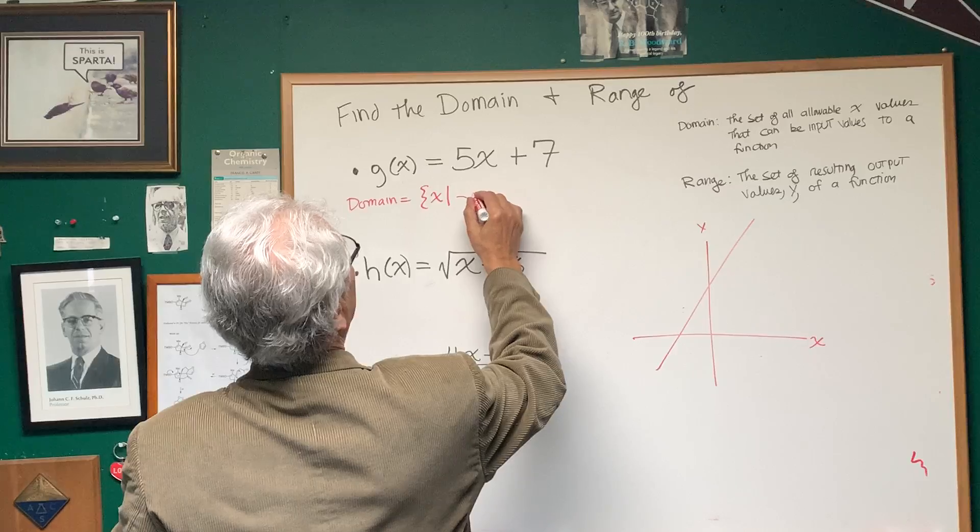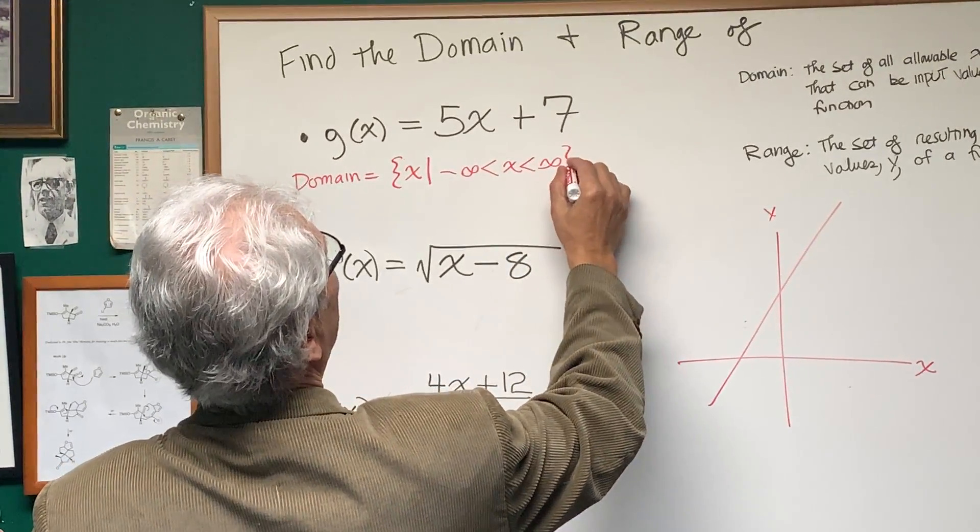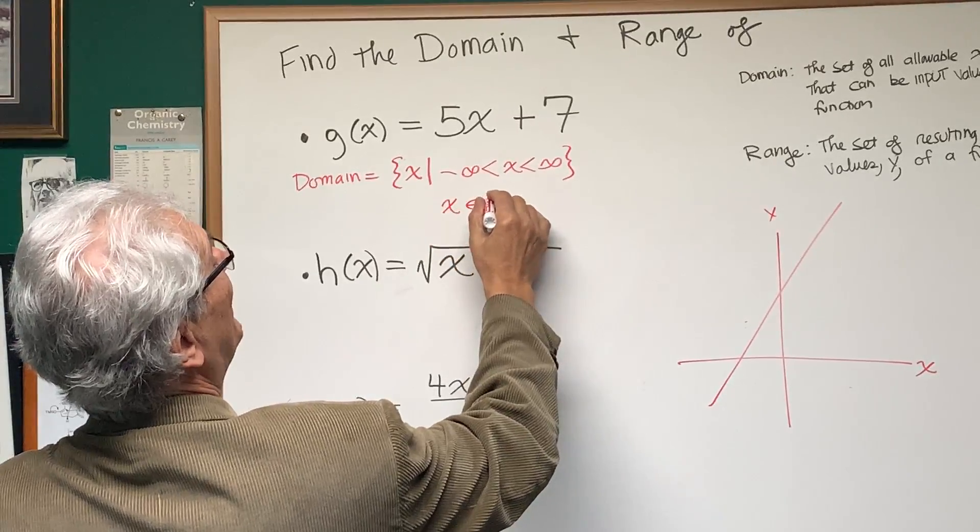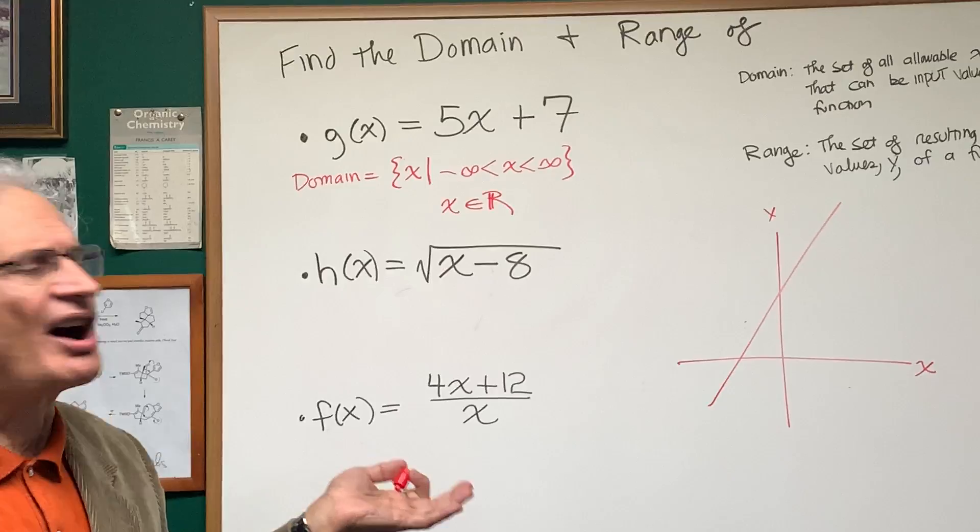So we can either write negative infinity is less than x is less than positive infinity. Another way to write this is x is an element of the set of all real numbers. There are no restrictions on x.